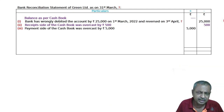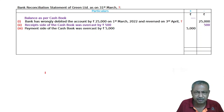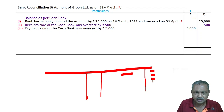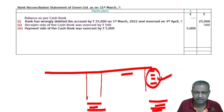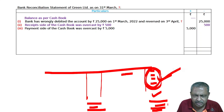Third: the payment side of the cashbook is overcast by 5,000. If the payment side totaling is overcast, the total is more than it should be, so the balance carried down will be less. Because more is being deducted on the payment side, the cashbook balance is less.